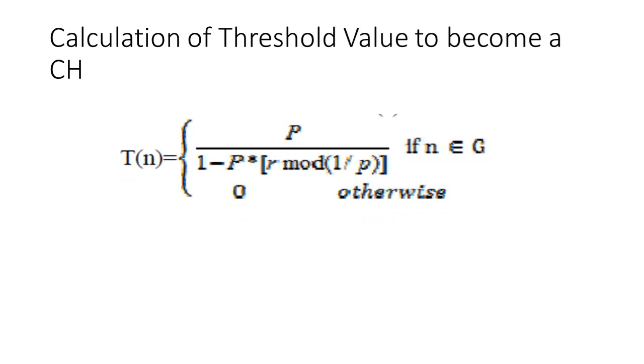During the setup phase, a predetermined fraction of sensor nodes, say P, elect themselves as cluster heads as follows. A sensor node chooses a random number R between 0 and 1. If this random number is less than a threshold value T, the sensor node becomes a cluster head for the current round.